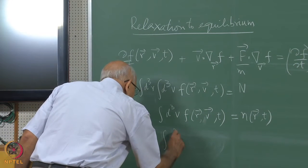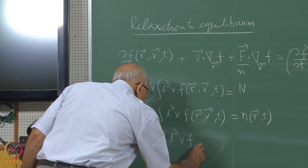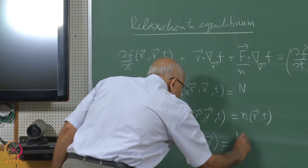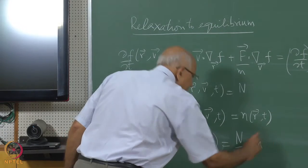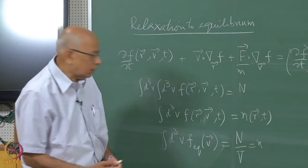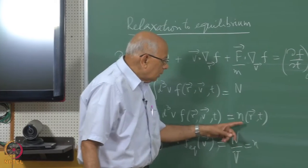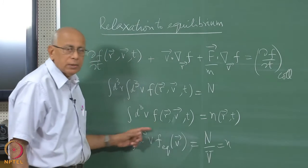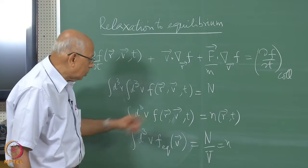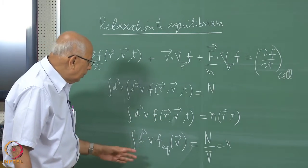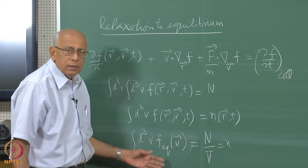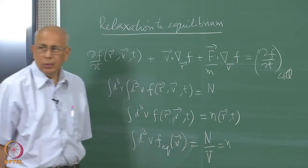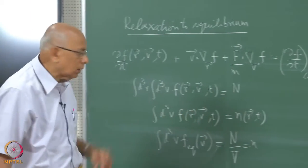So we wrote: integral D3V of F equilibrium of V equals N over V, equal to N — the number density. So let me define this non-uniform density by integrating over the velocity alone. In equilibrium there is no T dependence and no R dependence; if I integrate over D3V I should get N over V. Those are the normalizations.